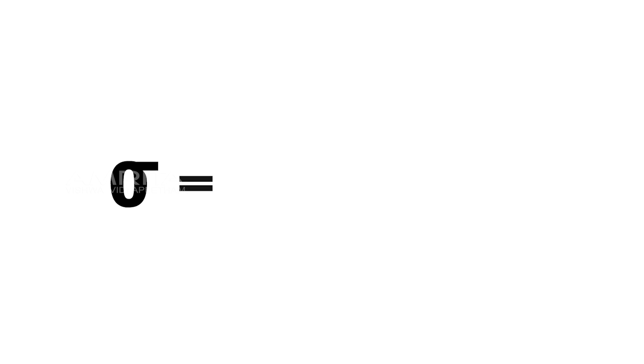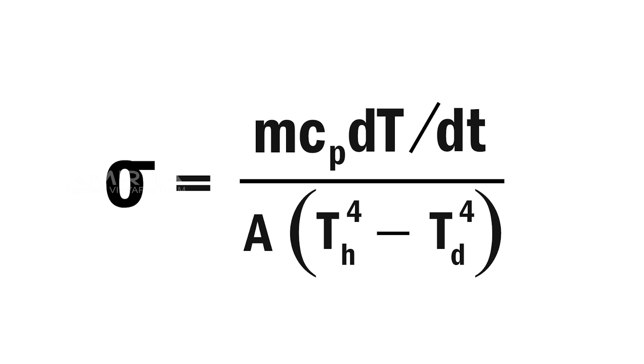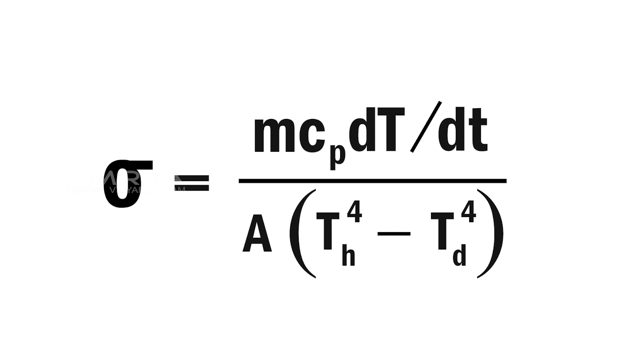By substituting the values for M, C_P, T_D, T_H and dT by dt in the last equation, we can calculate the Stefan's constant, sigma.